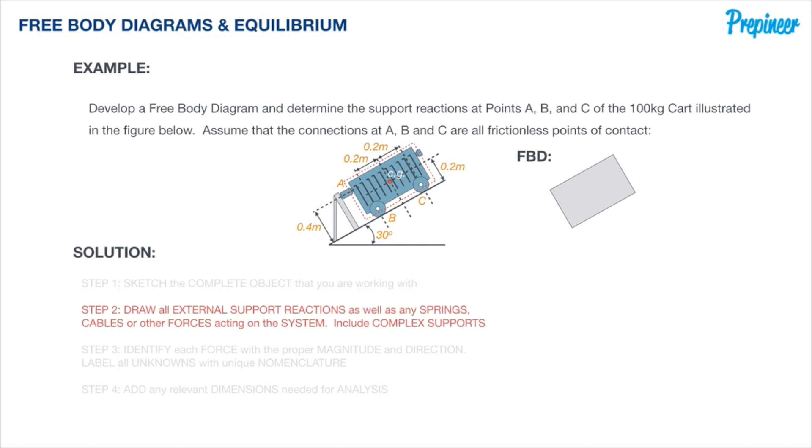The next step is to identify all the external support reactions, springs, and cables that are attached to our object. We will also include any complex supports, self-weight—things like wedges or ramps, which we have in this case.